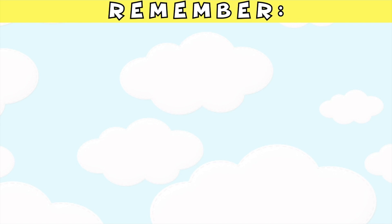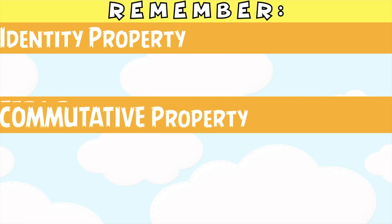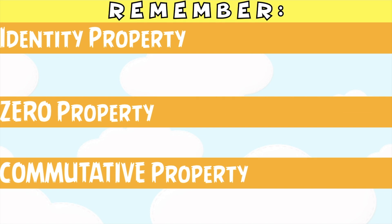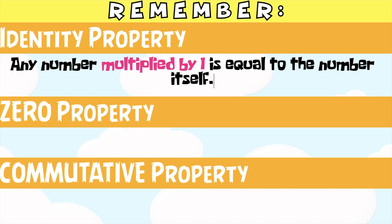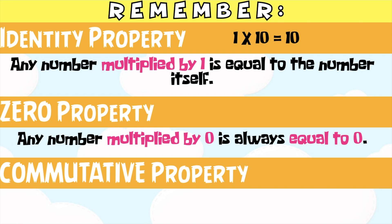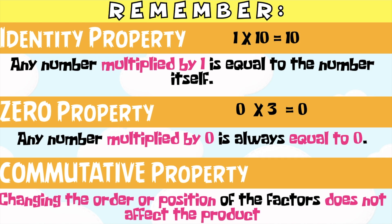Always remember, we have 3 properties of multiplication: identity property, zero property, and commutative property. For the identity property, any number multiplied by 1 is equal to the number itself — for example, 1 times 10 is equal to 10. For the zero property, any number multiplied by 0 is always equal to 0 — for example, 0 times 3 is equal to 0. For the commutative property, changing the order or position of the factors does not affect the product — for example, 2 times 5 is equal to 5 times 2.